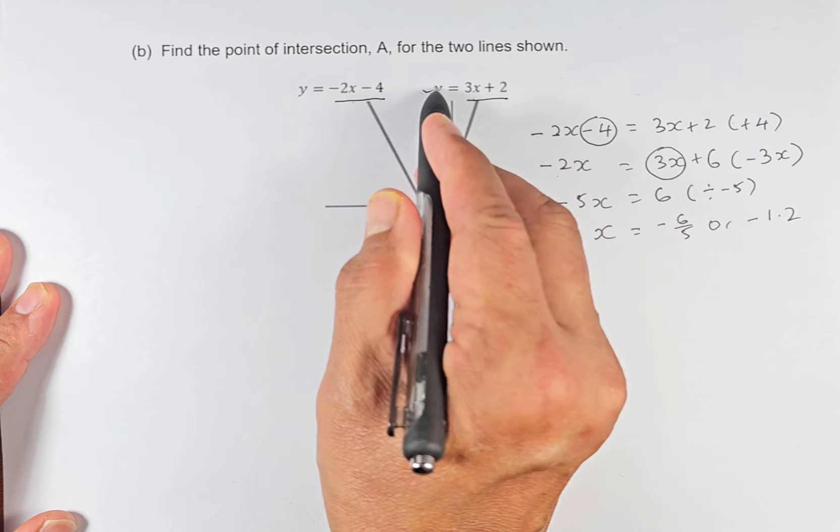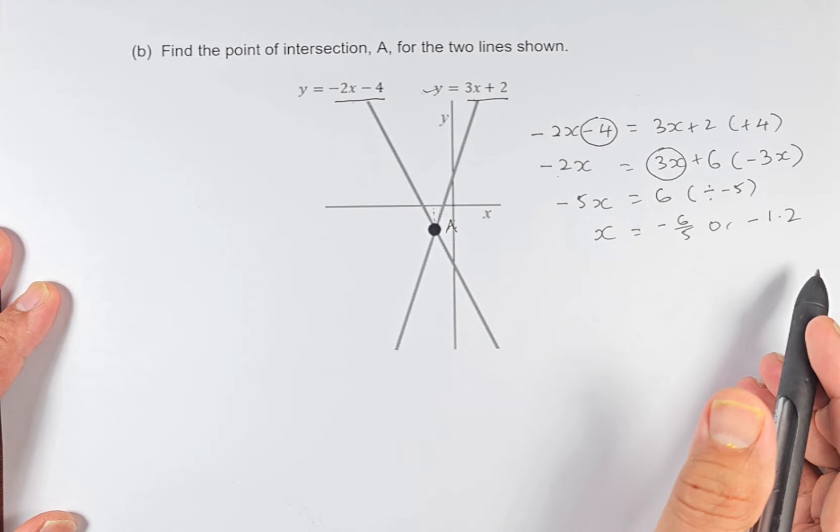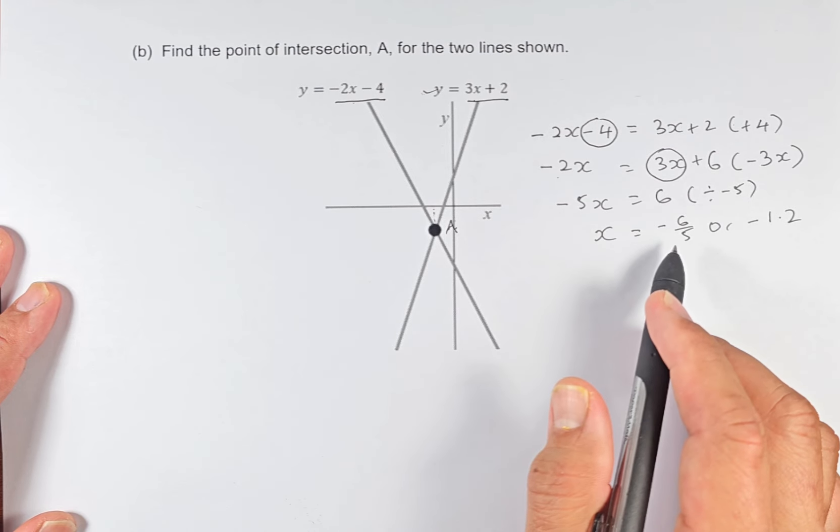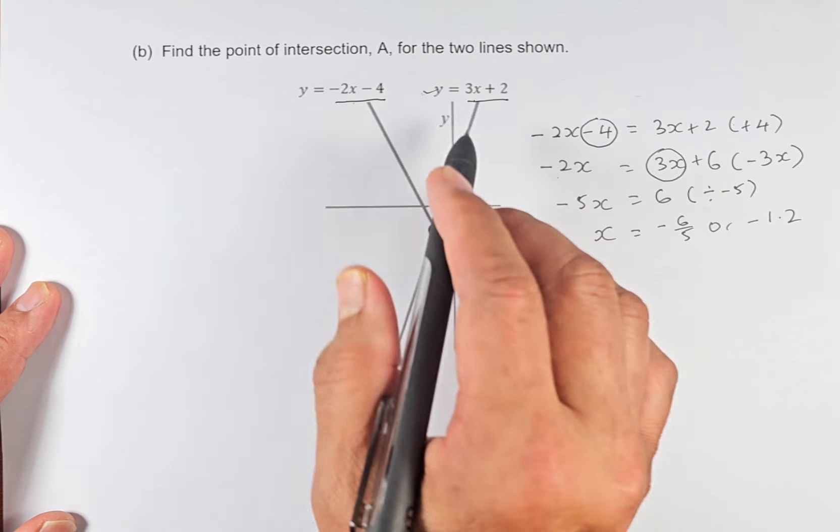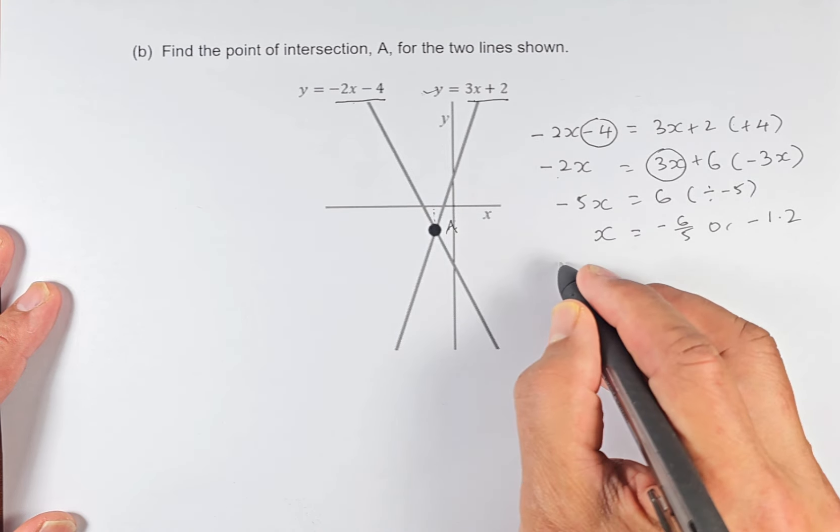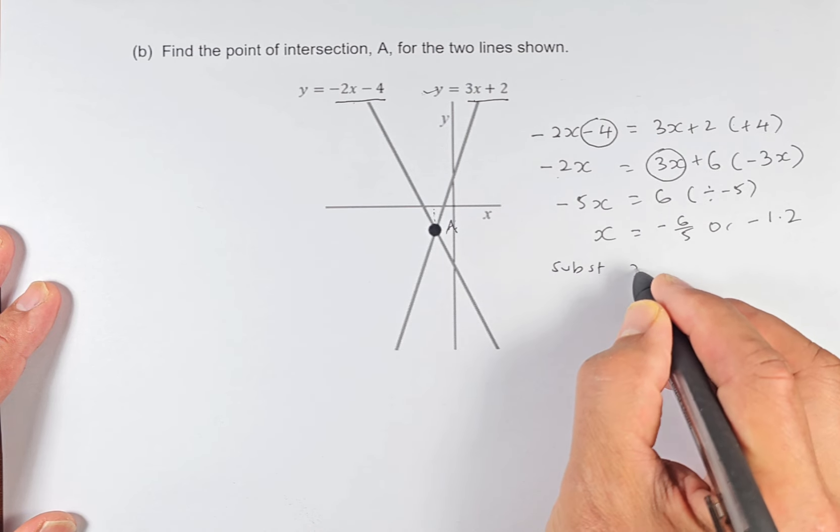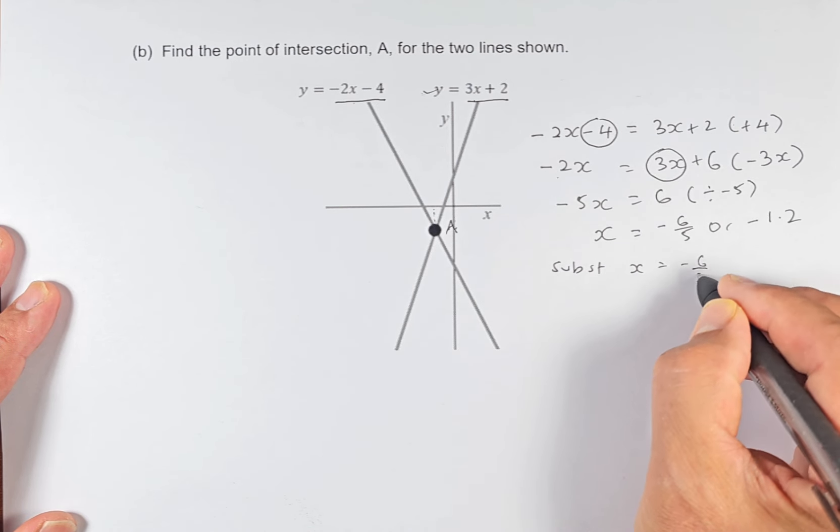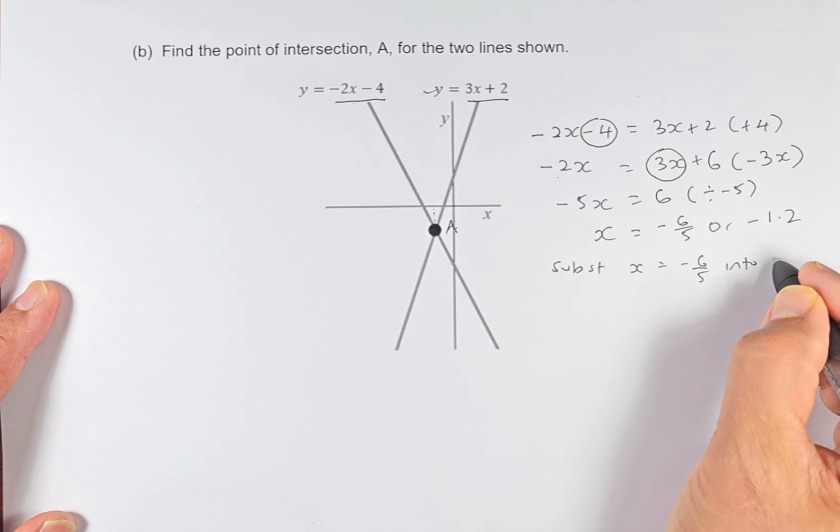I reckon this is easier because we don't want to deal with the negative number. So substitute x into either one of the equations. I will substitute x equals -6/5 into y equals 3x + 2, because that is the easier equation for me.